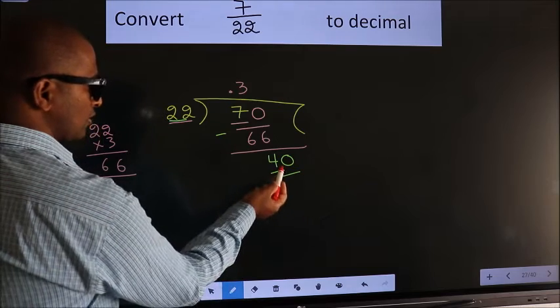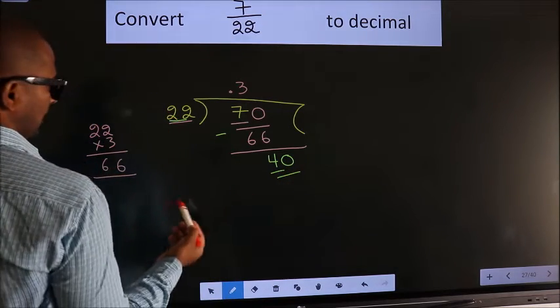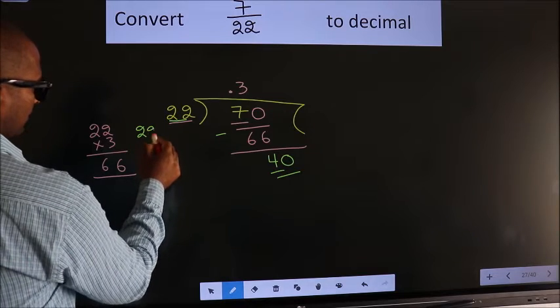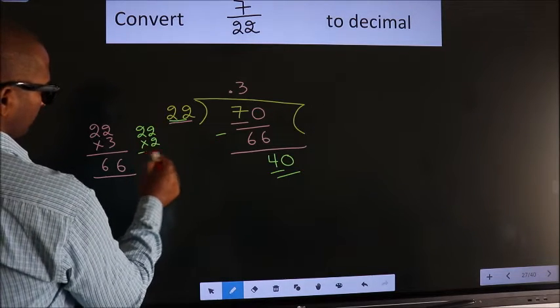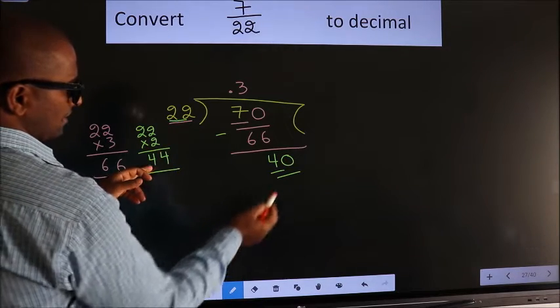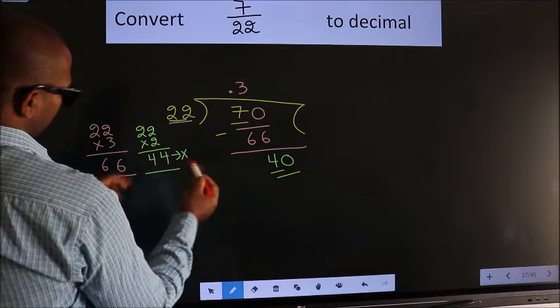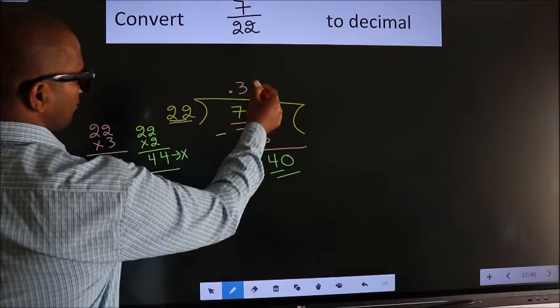A number close to 40 in 22 table is, let us take 2 and check. 2 times 2 is 4, 2 times 2 is 4. 44 is exceeding 40. So we cannot take this. So we should go with 1.